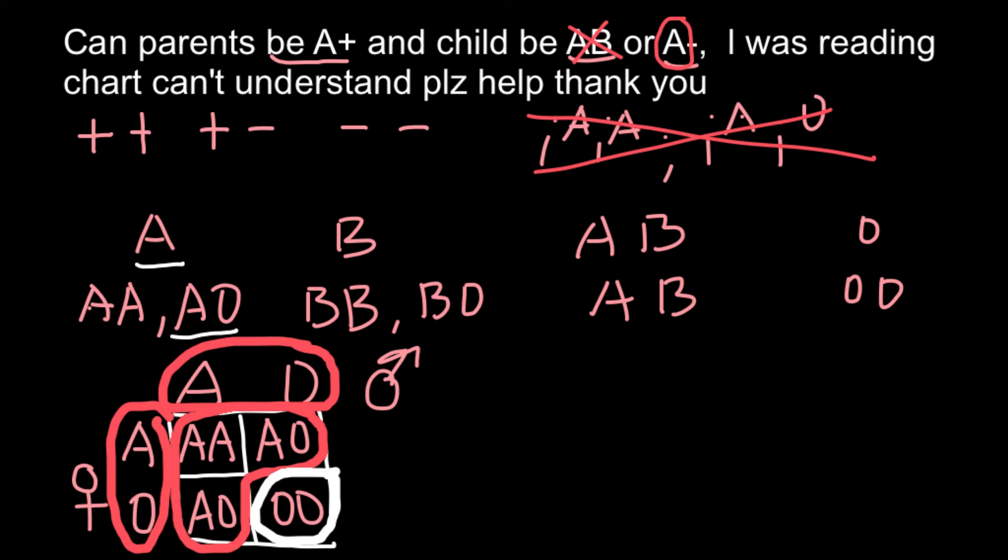Now imagine that both parents would be heterozygous, so would be positive. As you remember, only one gene is enough, so phenotype would be positive. So both parents who are going to be heterozygous and their phenotype would be positive...